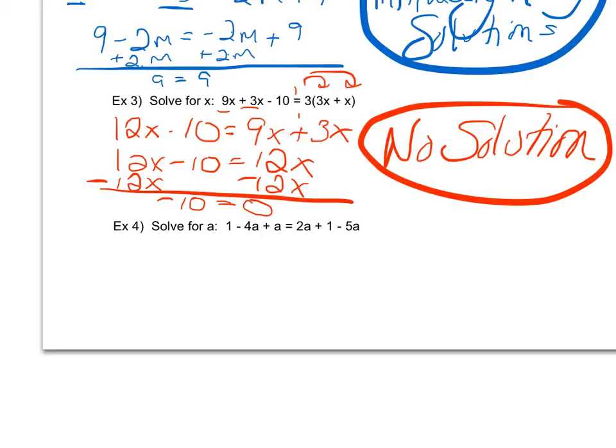And then let's look at example 4. So I don't have anything to distribute, so I'm going to go ahead and I'm going to combine like terms. So on the left, I have -4a and positive 1a, so that's going to give me a -3a. On the left, 2a and -5a is going to give me a -3a.